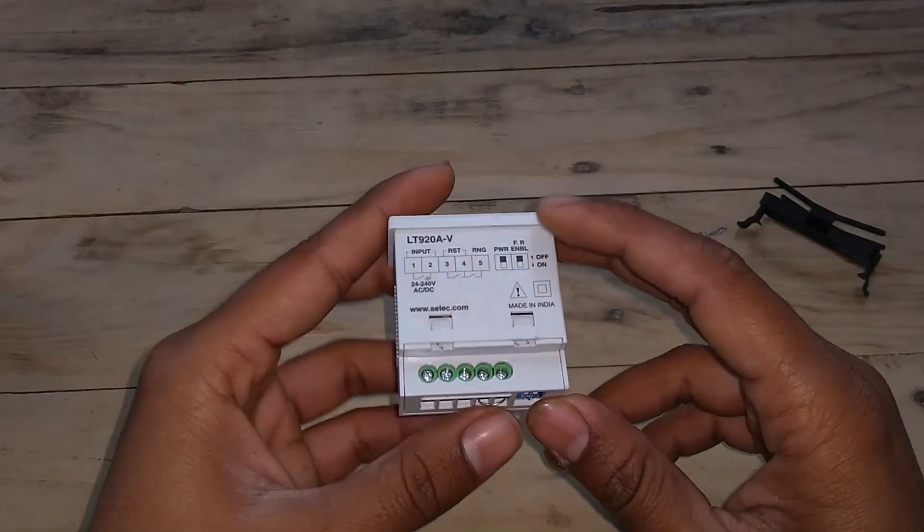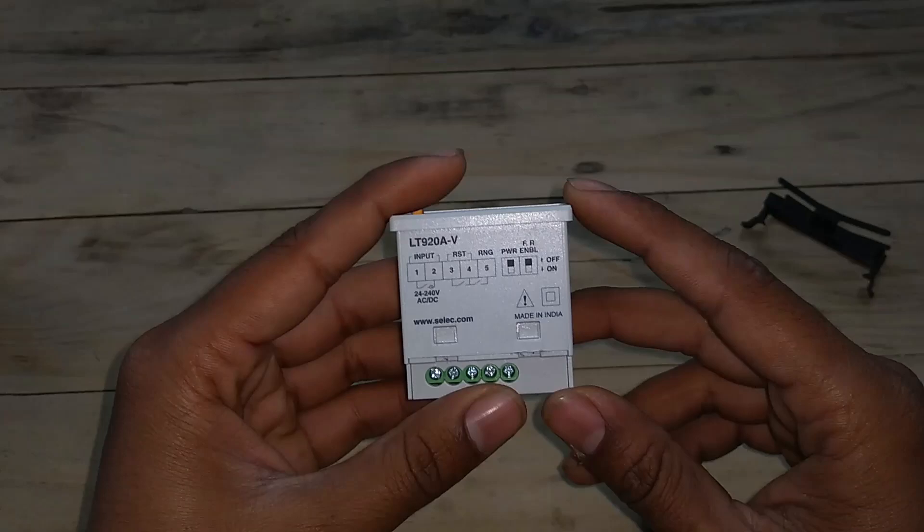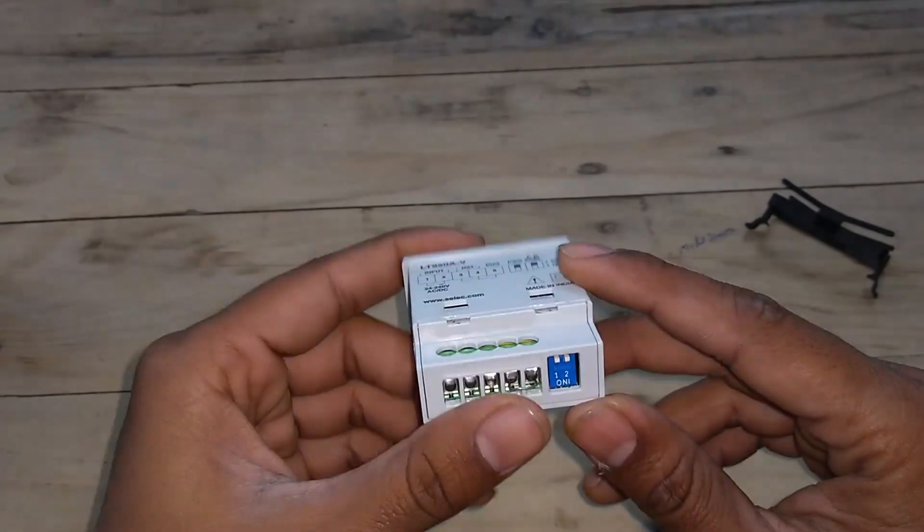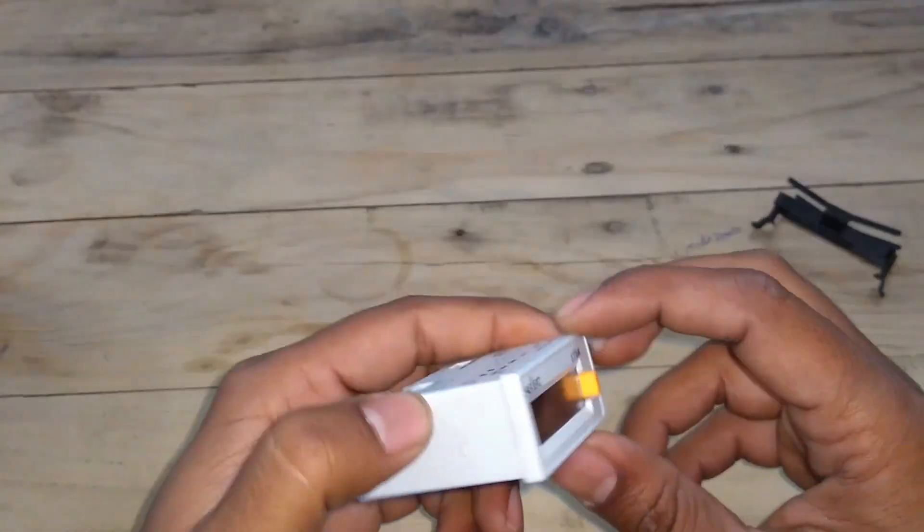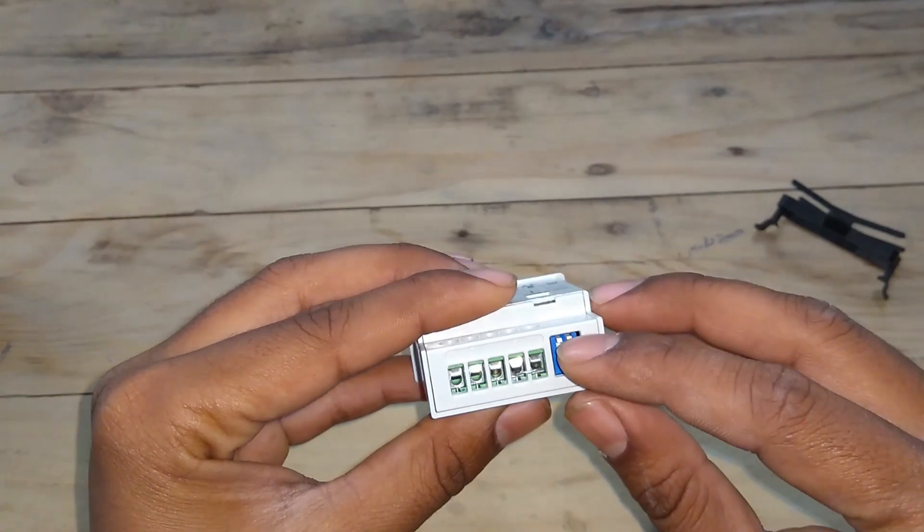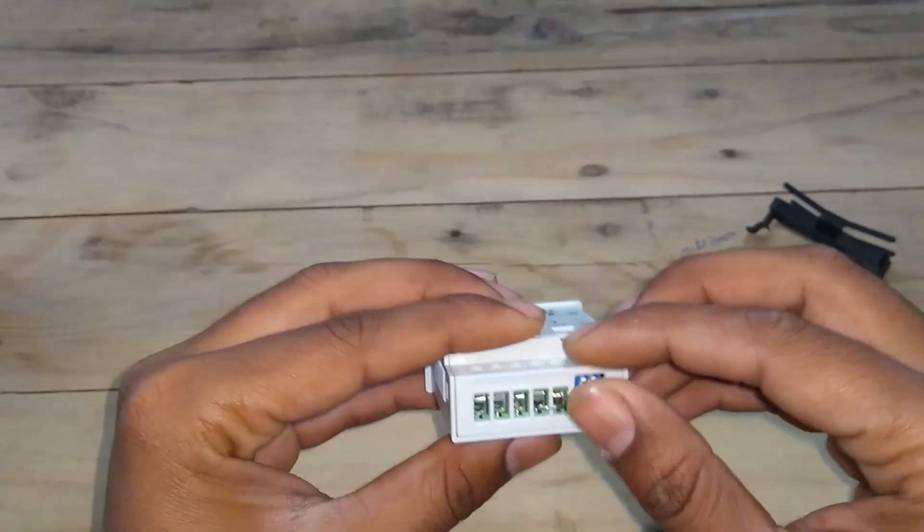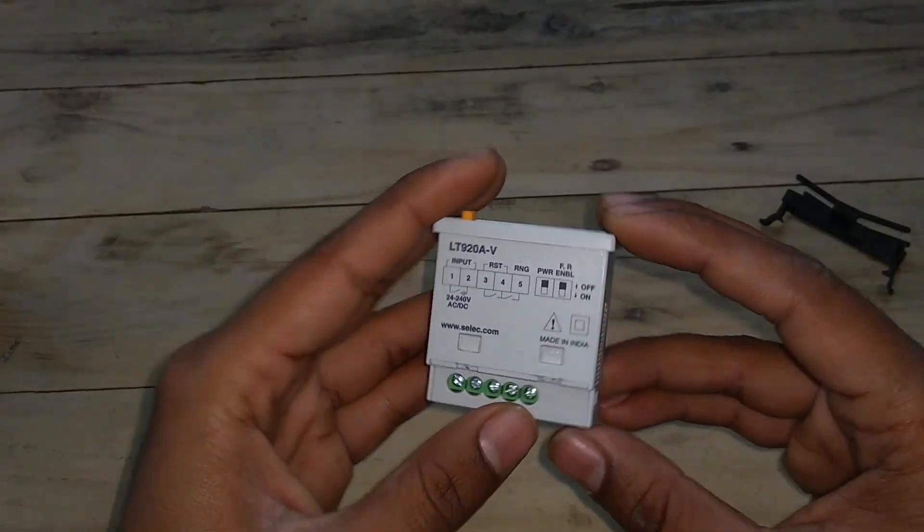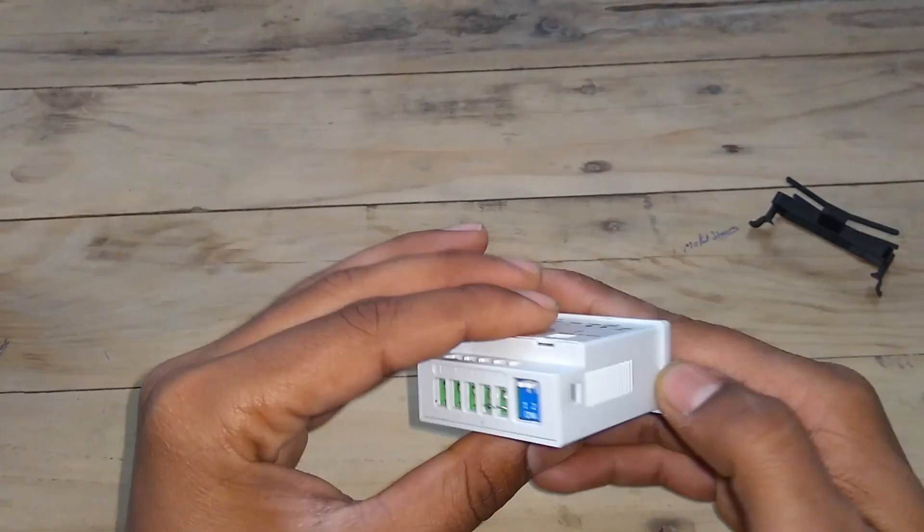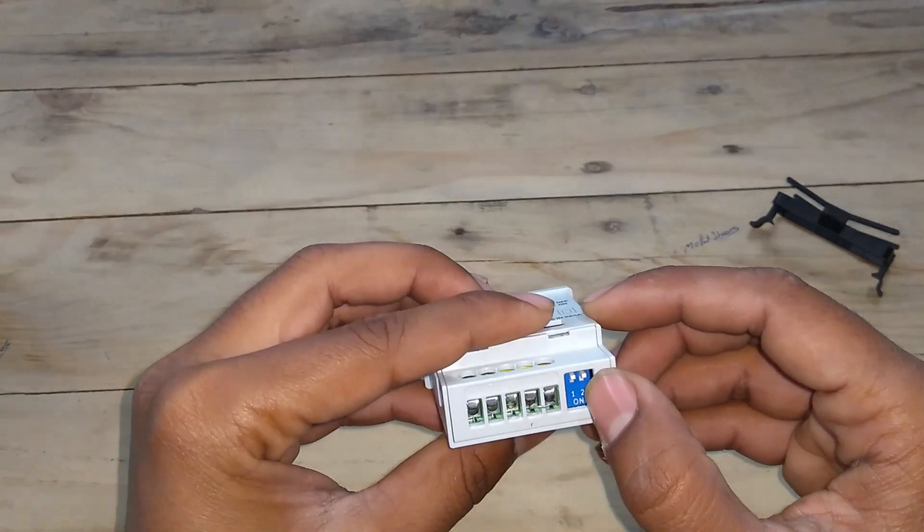Other than that, there are two DIP switches. One for power and one for FR enabled, which means if you want front reset enabled, then you have to turn on the second switch, which is FR enabled. If you want to disable the front reset button, this one, you can disable this number two DIP switch.